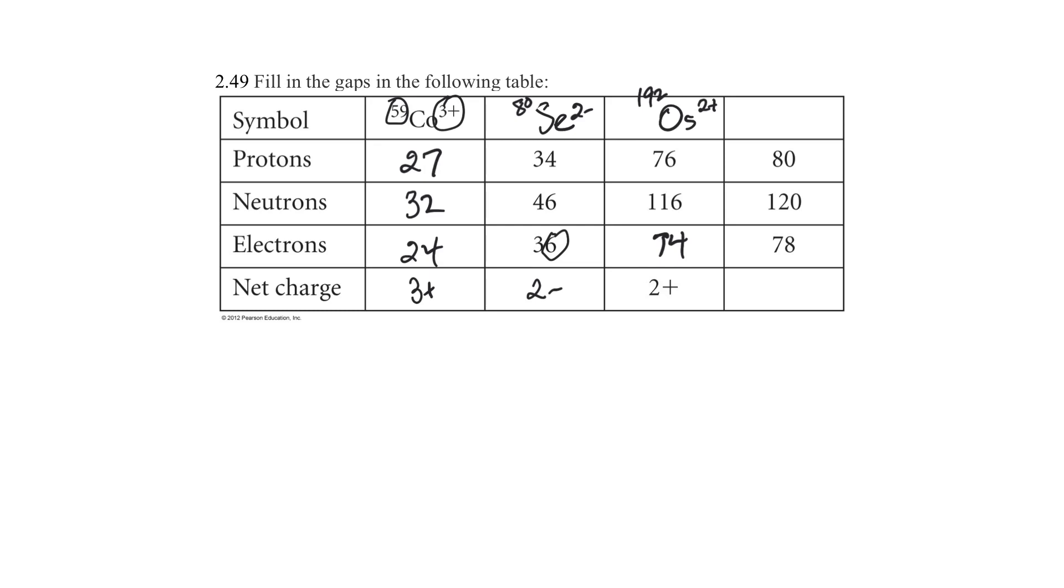Next one I see is 80. Periodic table says that that's mercury. I have protons and neutrons, so 120 plus 80 is 200, so this is mercury 200. I look at protons and electrons and see that I have two less electrons. If I have two less electrons, I must have a charge of positive by two. So this is two plus. Hope that helps.